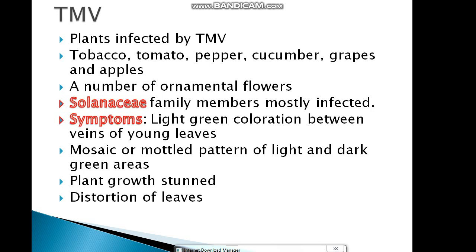TMV infects plants of the Solanaceae family, including tobacco, tomatoes, pepper, grapes, and apples. The symptoms appear on the plant leaves — it starts with dark green and light green mosaic patterns. The first symptoms are on the leaves, followed by downward curling, distortion, damage, and stunted growth of the plant leaves.